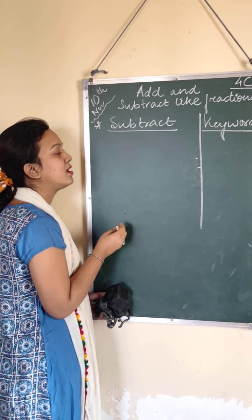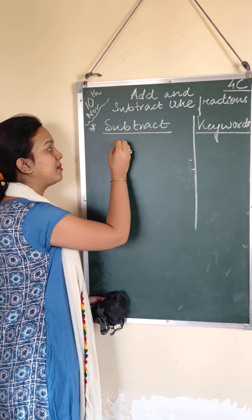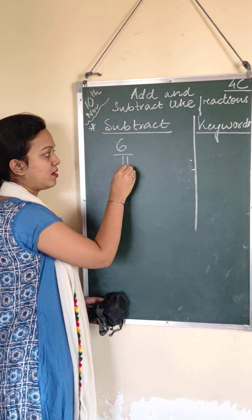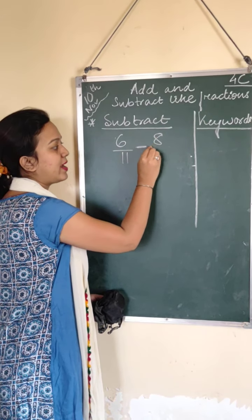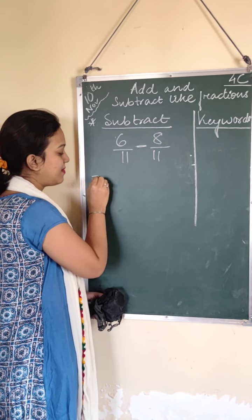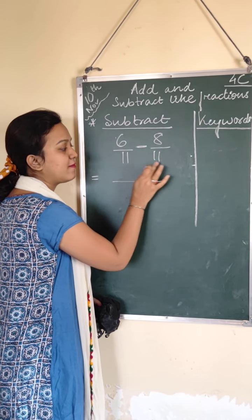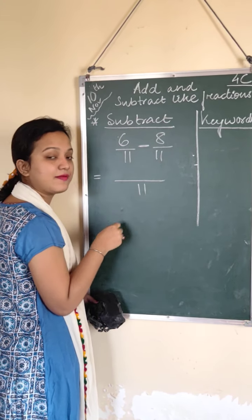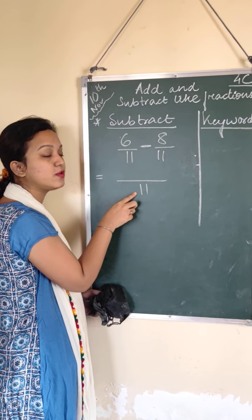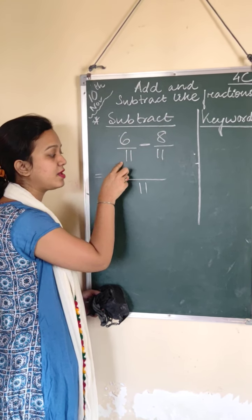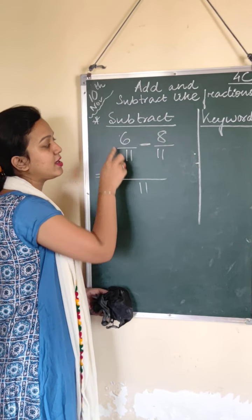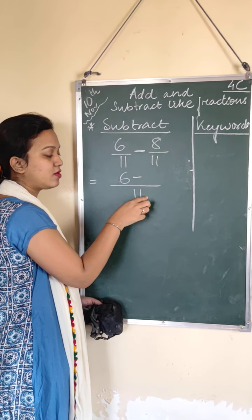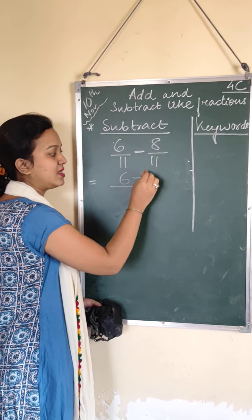The next thing is, suppose I take a different number: 6 by 11 minus 8 by 11. The same thing — you have two same numbers in the denominators. I will simply put 11 here. Think of a number which gives you 11. This is 11 into 1 gives you 11, so 1 into 6 is nothing but 6. The same thing minus — 11 into 1 is 11, and 1 into 8 is nothing but 8.